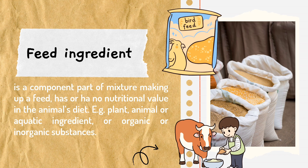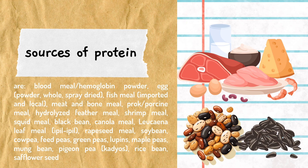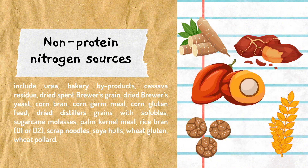Sources of energy include banana, milk, barley, cassava, corn, oats, rice, sorghum, sugarcane, sugar, and wheat. For sources of protein: blood meal or hemoglobin powder, egg, fish meal, meat and bone meal, porcine meal, hydrolyzed feather meal, shrimp meal, squid meal, black bean, canola meal, leucaena, and leaf meal. For non-protein nitrogen sources: urea, bakery byproducts, cassava residue, dried spent brewer's grain, dried brewer's yeast, corn bran, corn germ meal, and corn gluten feed.